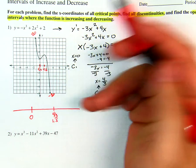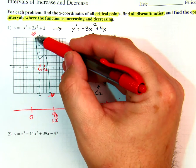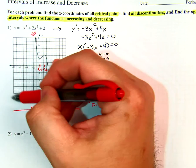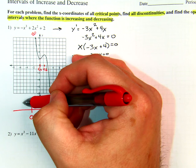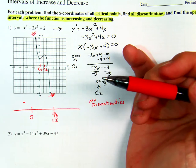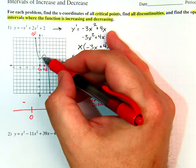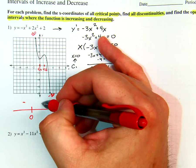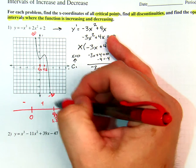Are we increasing or decreasing approaching this first critical value? Decreasing — so when I apply the test I should get a negative value. I would agree. And in between the critical values we're increasing, so that should be positive. And after the second critical value it should be negative.